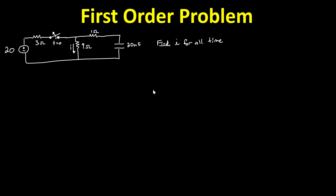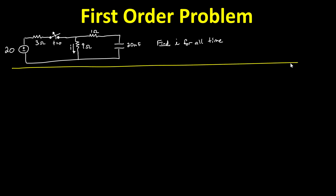Secondly, is it switched DC? All the sources in it are DC sources — there are no time-varying sources. And the value of the sources change at time equals zero from this switch. It might have also looked like a 20·u(t) source without the switch, which would be 20 for time greater than zero or zero for time less than zero. But this schematic instead uses a physical switch to get our switched DC value. Now that we've determined it is indeed a first order switched DC problem, let's begin the analysis.